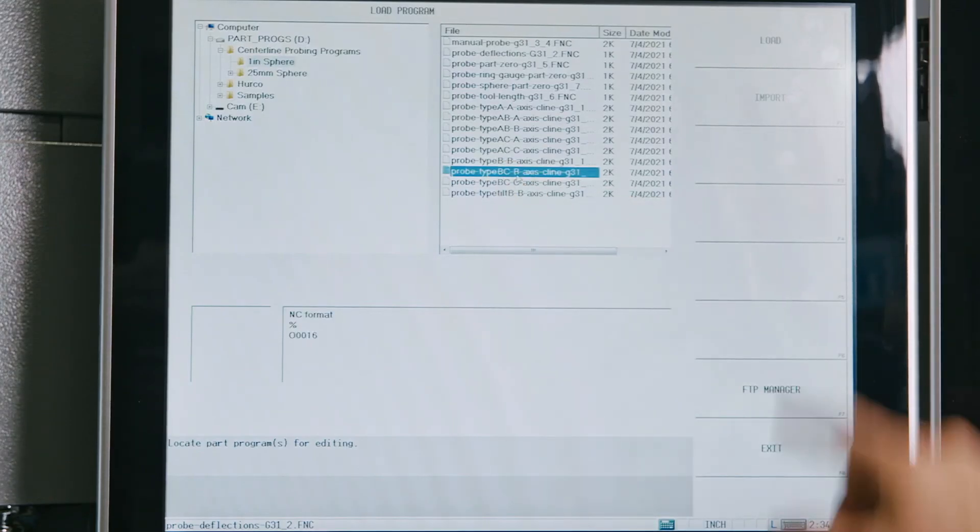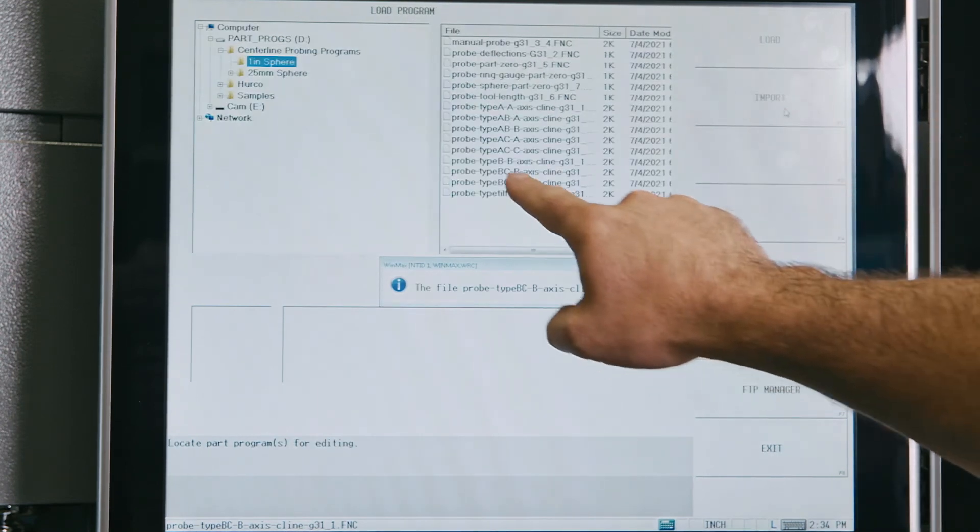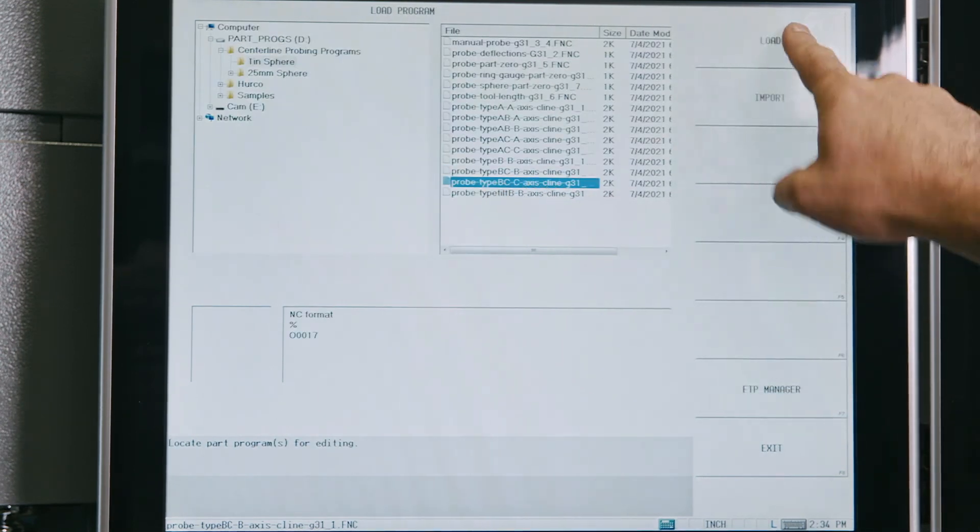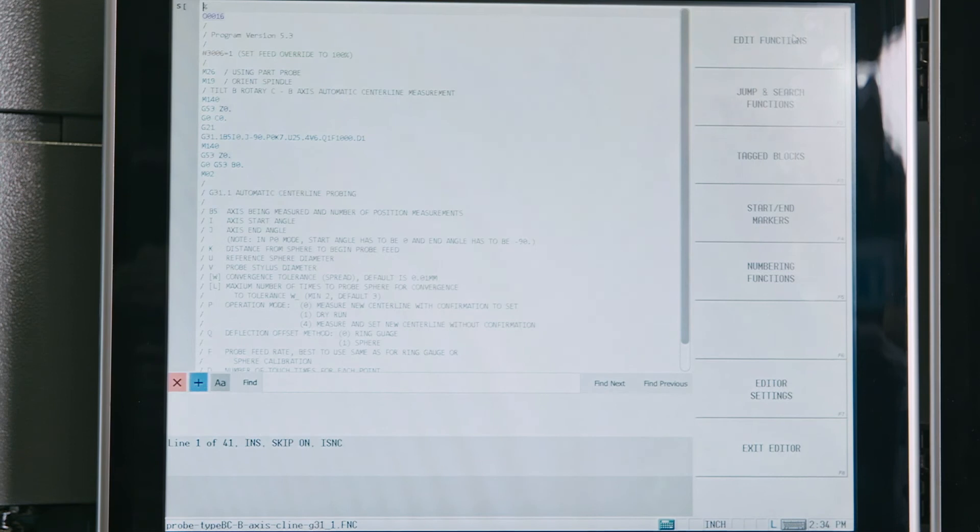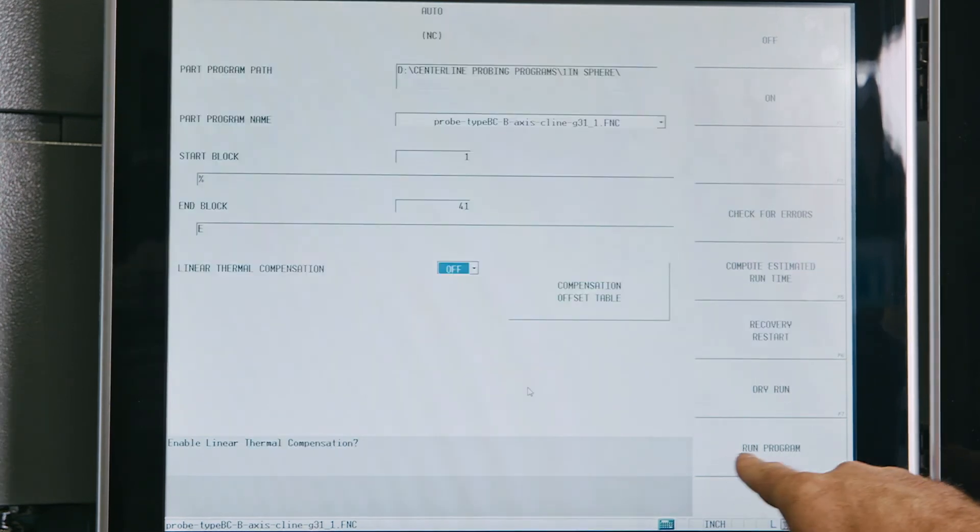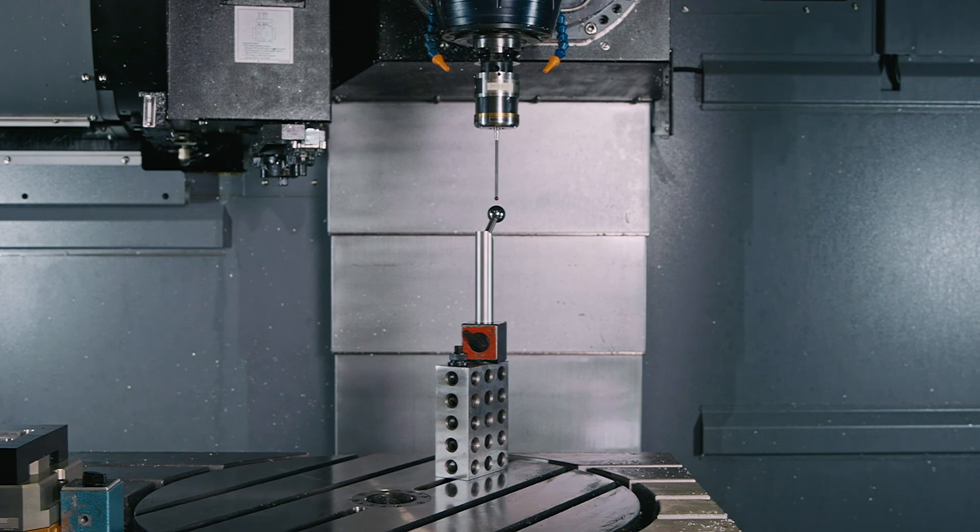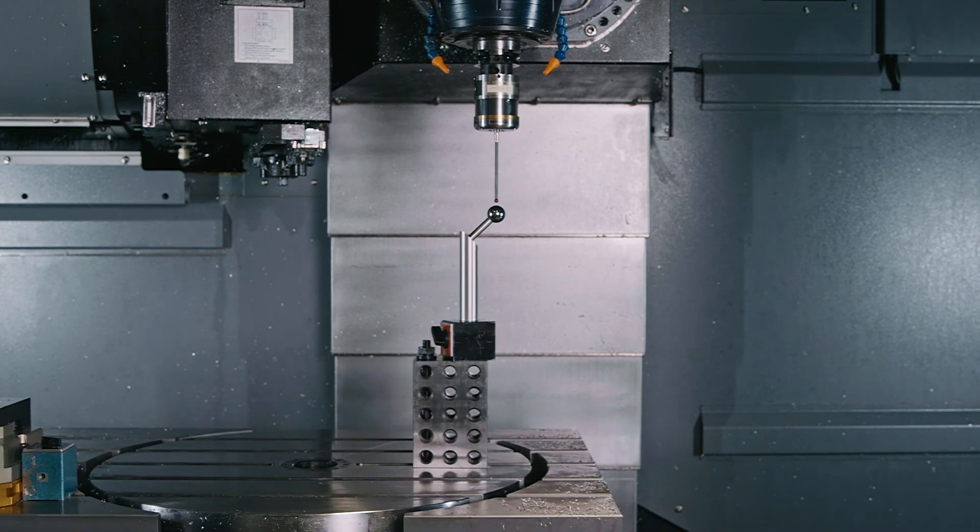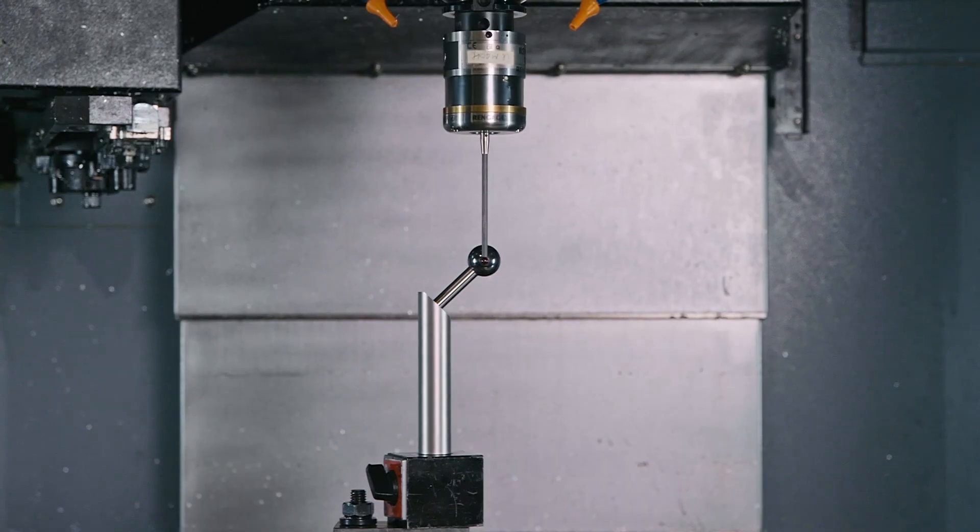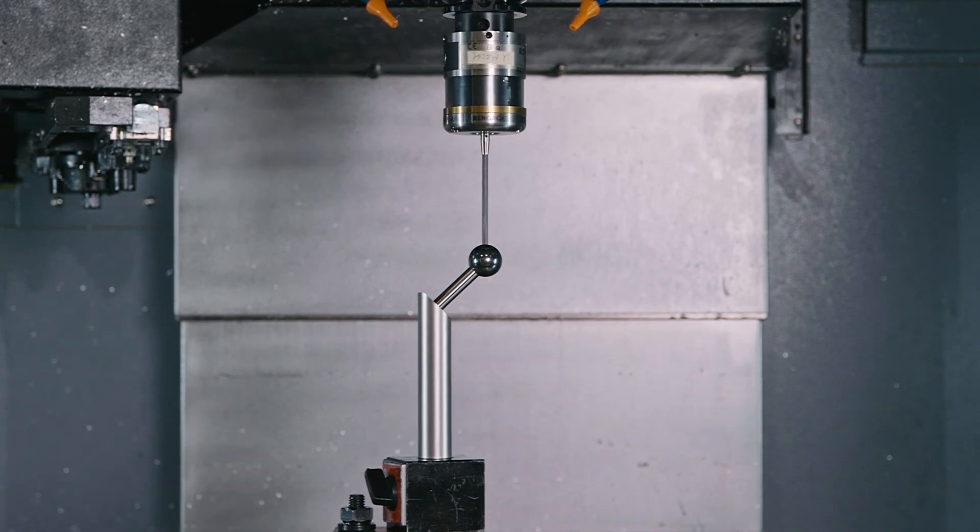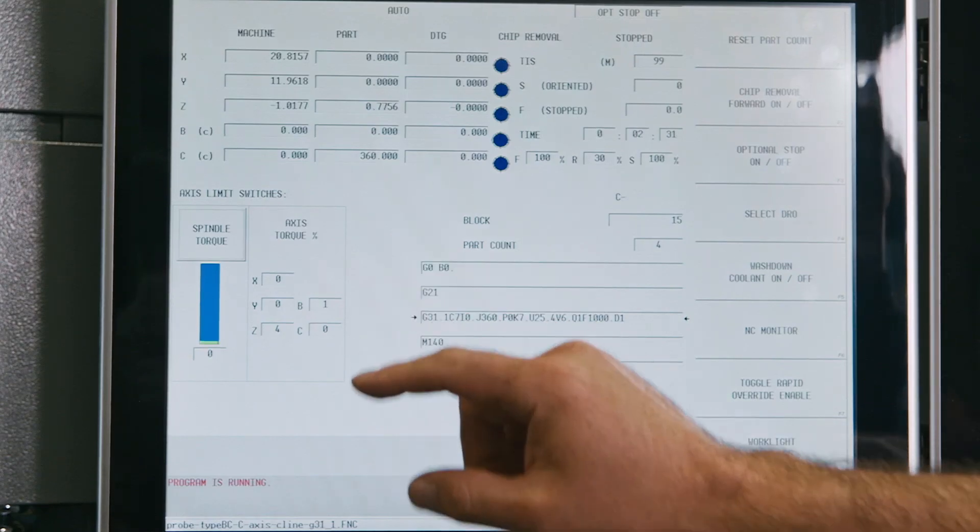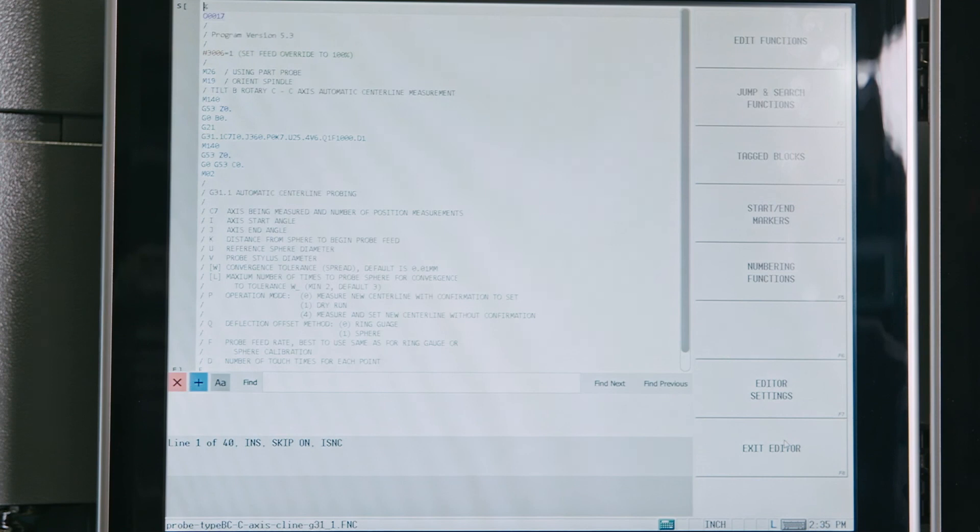Once center lines have been recorded, we have the option to use the automatic probing routine. Select the program for your machine type and axis. Run the program and accept the changes when it's finished. Repeat for each axis required and you're done.